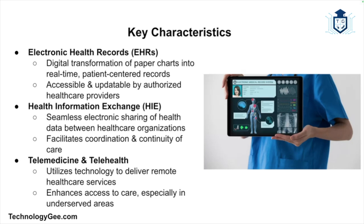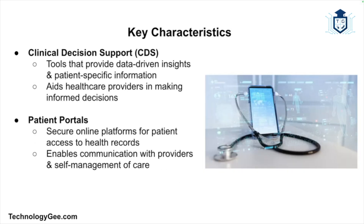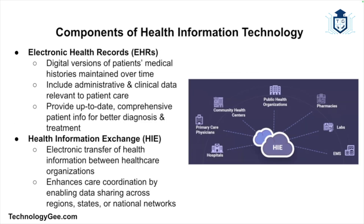Let's talk about some of the key characteristics of HIT, or health information technology. The first is electronic health records — digital versions of patients' paper charts that provide real-time, patient-centered records. We also have health information exchange, the electronic sharing of health information across different healthcare organizations. Then telemedicine and telehealth, which use technology to deliver healthcare services remotely. There's clinical decision support, and patient portals — online platforms that allow patients to access their health information, communicate with providers, and manage their care.